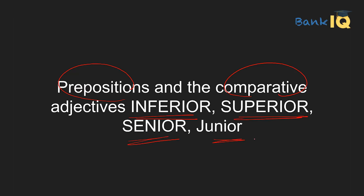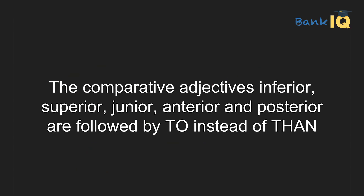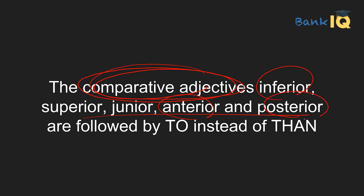Prepositions and comparative adjectives: जैसे inferior, superior, senior, junior, anterior, posterior — यह सारे comparative adjectives 'to' के साथ follow होंगे, 'than' के साथ नहीं। These comparative adjectives are followed by 'to' rather than 'than' — this is also a very common error that we need to remember.